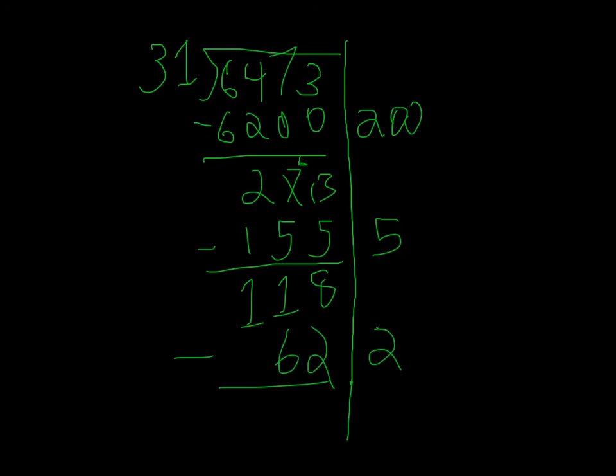Now I'm going to do 31 times 2, and that equals 62. Now I know that 118 minus 62 equals 56.